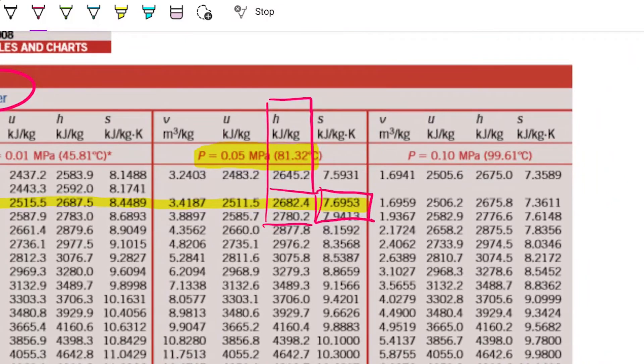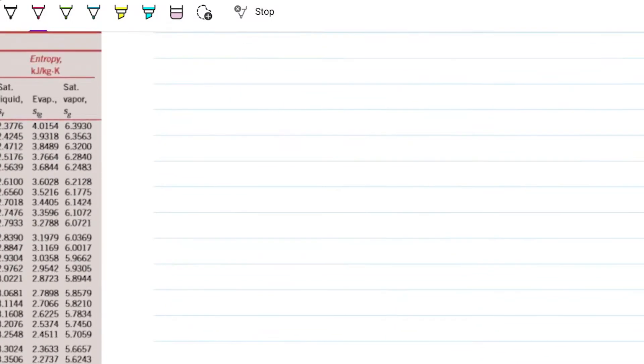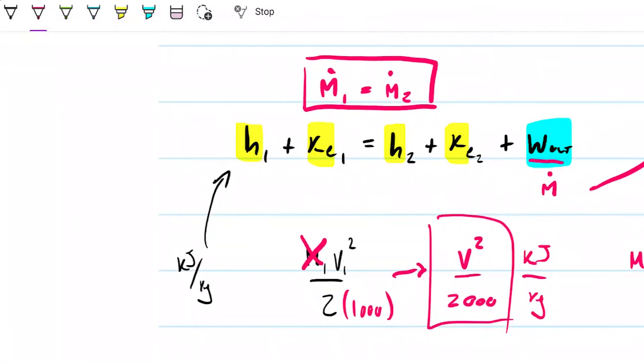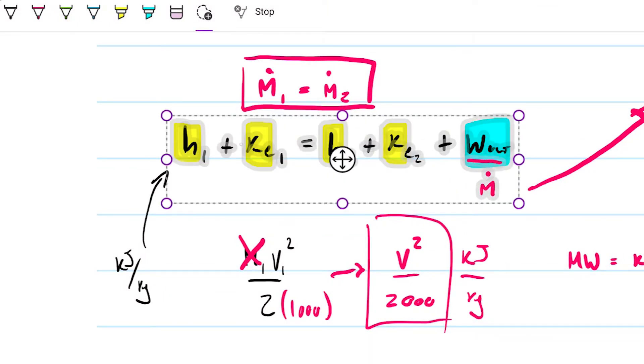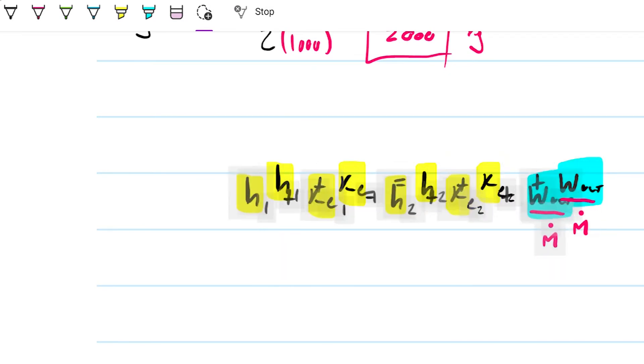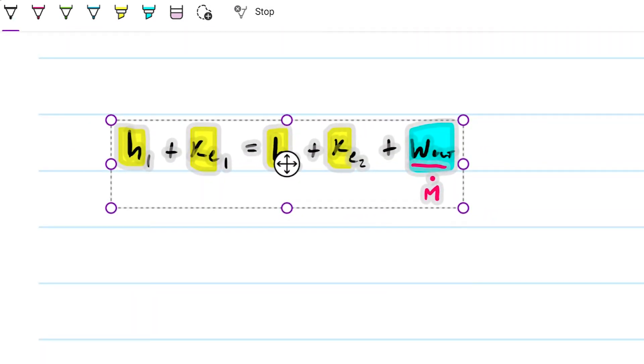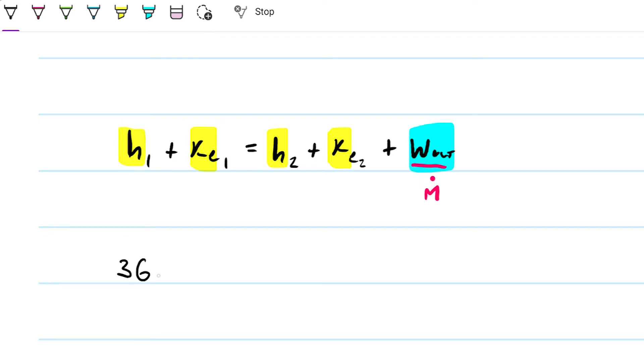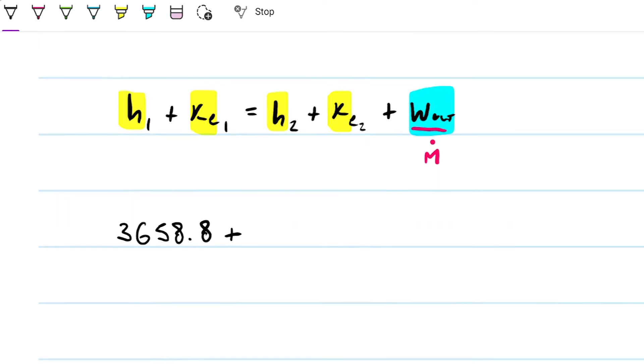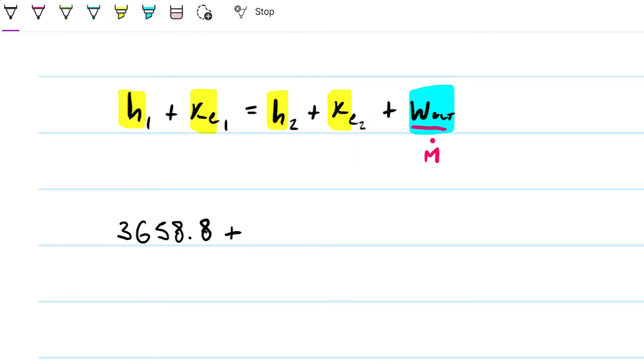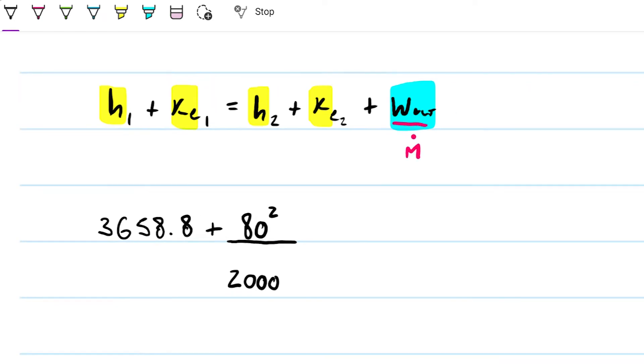So those are the values that I needed for H. And I can go ahead and now solve this equation here for the mass. Where are we? Here we are. So let me go ahead and copy paste this. And then on state number one, we're going to have 3658.8. That is kilojoules per kilogram. On kinetic energy of one, we have the velocity. Velocity of state one was 80 meters per second.